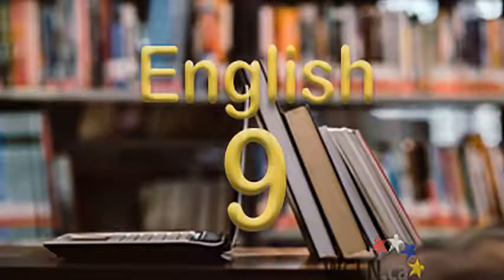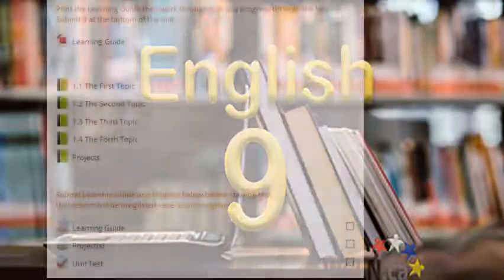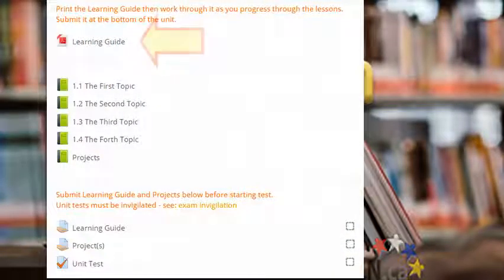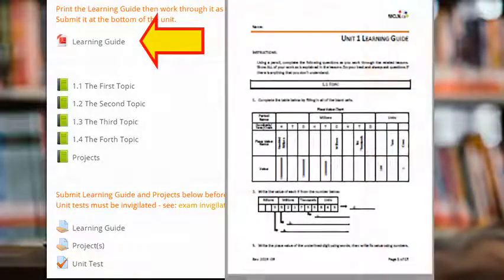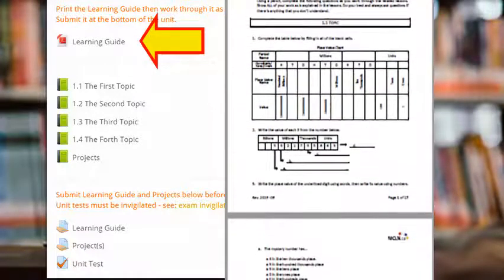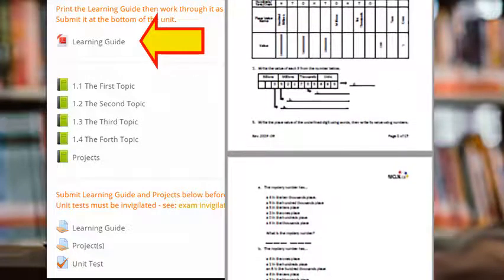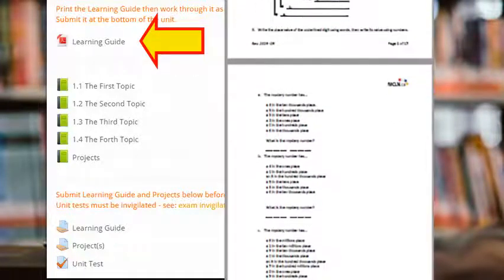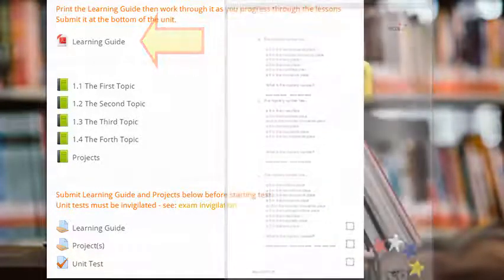Once ready to get started with the course content, head into the first unit. At the top of the unit, you'll find a learning guide. As you work through the lessons, you'll be using the learning guide to help you take notes and practice new skills. Keep your learning guide neat and well organized so it's ready for submission at the end of the unit.